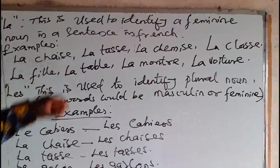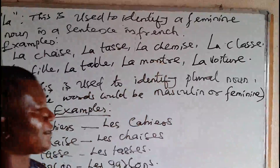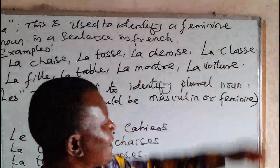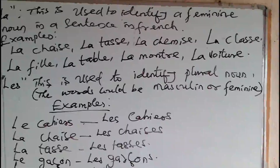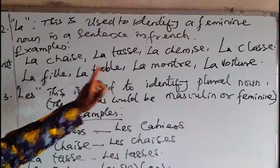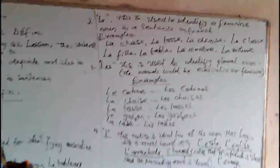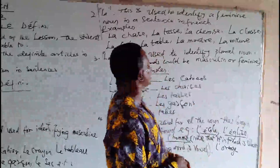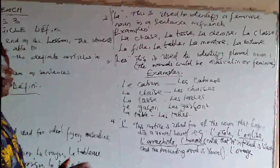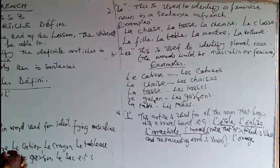You can see the feminine examples on the board: la chaise — the chair; la tasse — the cup; la chemise — the shirt; la classe — the class; la fille — the girl; la table — the table; la montre — the watch; and finally la voiture. Note that «le tableau» and «la table» look similar but are different words — tableau means board and table means table, so they happen to be different genders. There are many more feminine words, but time will not permit us to go through all of them. These are just a sample of the feminine words we have.